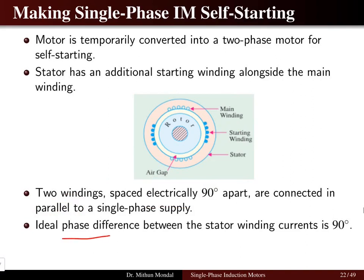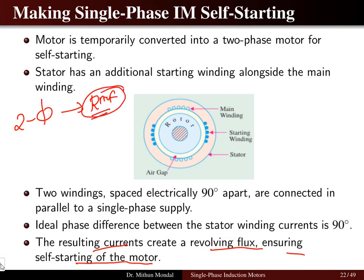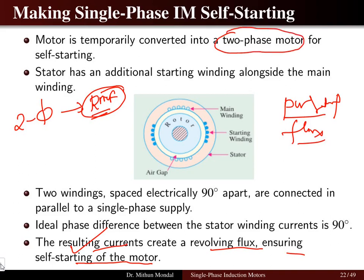The main winding and the starting winding are 90 degrees apart electrically and connected in parallel to a single-phase supply. The ideal phase difference between the stator winding currents is 90 degrees. The resulting current creates a revolving flux, ensuring self-starting of the motor. When two-phase supply is given, the rotating magnetic field of constant magnitude 1.5 times phi_m is produced. Without it, only pulsating flux is present, which creates noise but does not rotate the rotor.